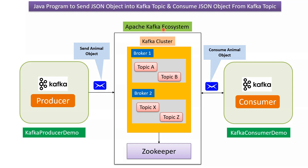Here you can see the Apache Kafka ecosystem. Here you can see the Kafka cluster. It has brokers, and each broker has topics. Here you can see the Kafka producer demo application, which is a Java program and it has producer code. Using this, it will send an animal object to a Kafka topic.